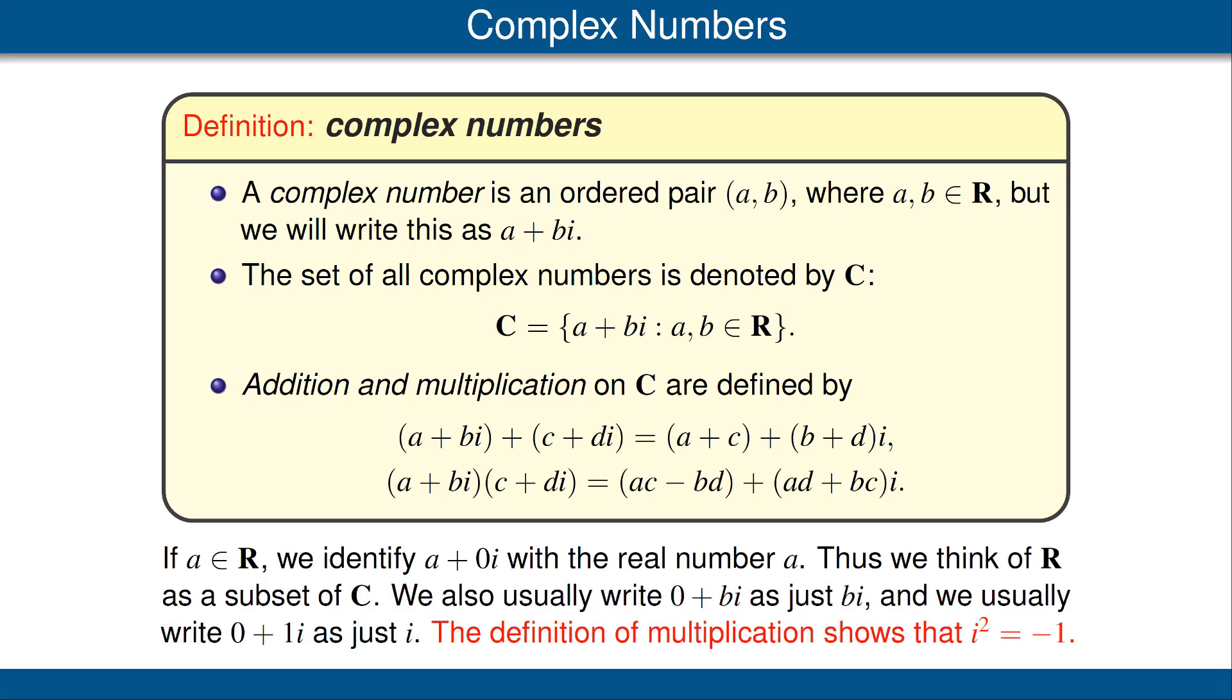Note that the definition of multiplication given above, with a and c equaling 0 and b and d equaling 1, shows that i squared equals negative 1.